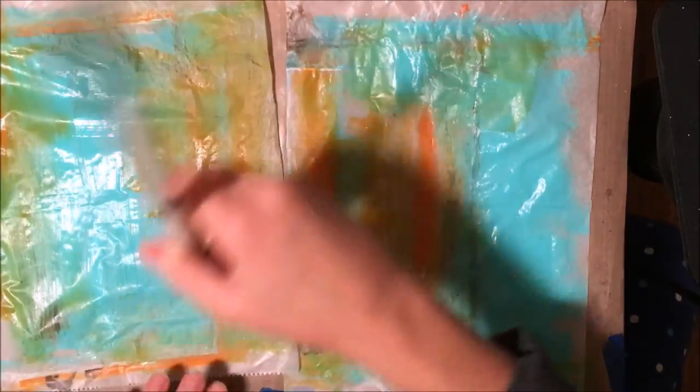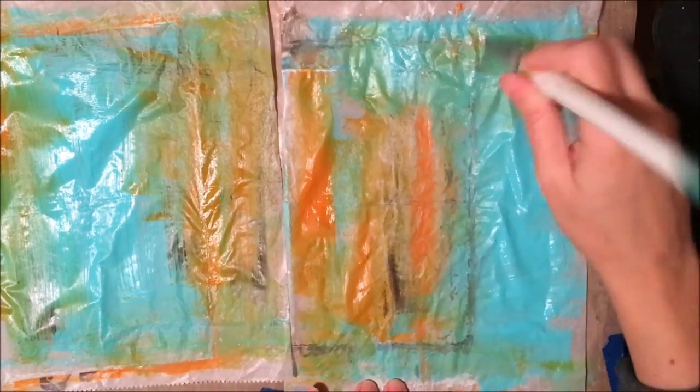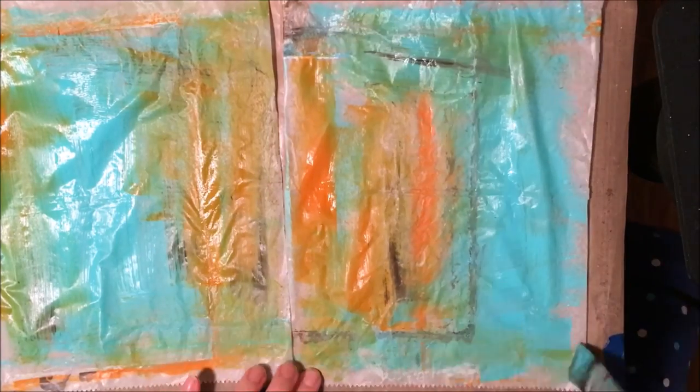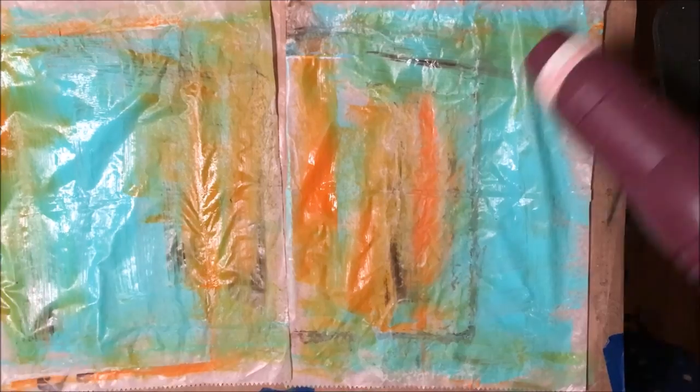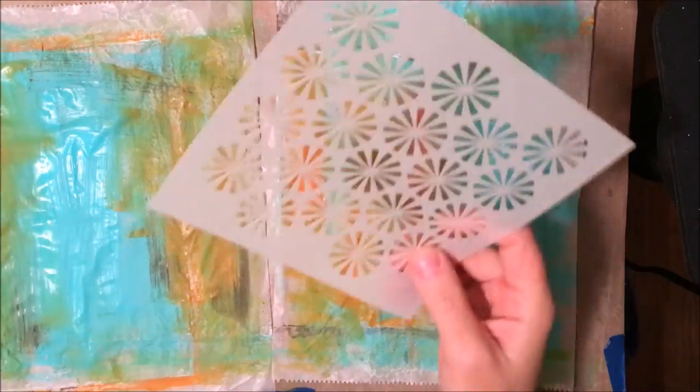So I'm adding just a little bit of that darker umber color just because I had some of that in that original paper that I had. And then I'm going to dry that with my heat tool.